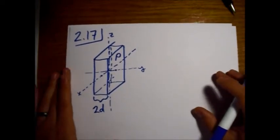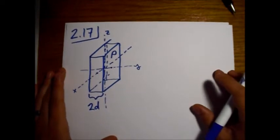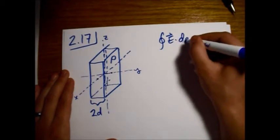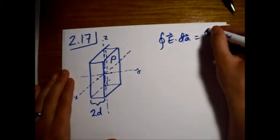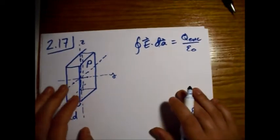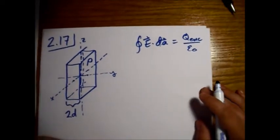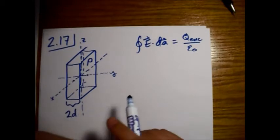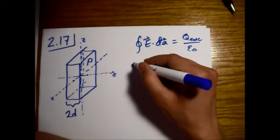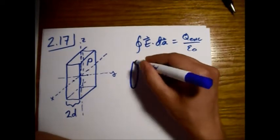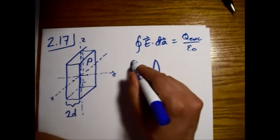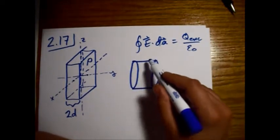This is another Gauss's Law problem. So we'll write out our Gauss's Law equation. What we're going to use is called a Gaussian pillbox, and basically what it looks like — it doesn't have to be this shape, but lots of times we'll use a cylinder.